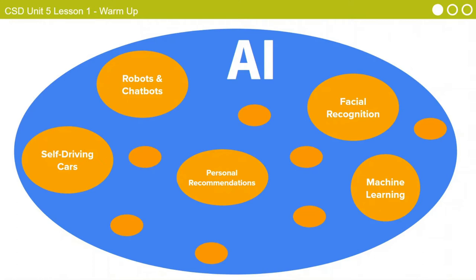Artificial intelligence is used in a lot of different places in our lives, from facial recognition in our phones to personal recommendations when we browse the web, and even in driverless cars. Over the next week or so, we're going to focus on a specific type of artificial intelligence called machine learning.